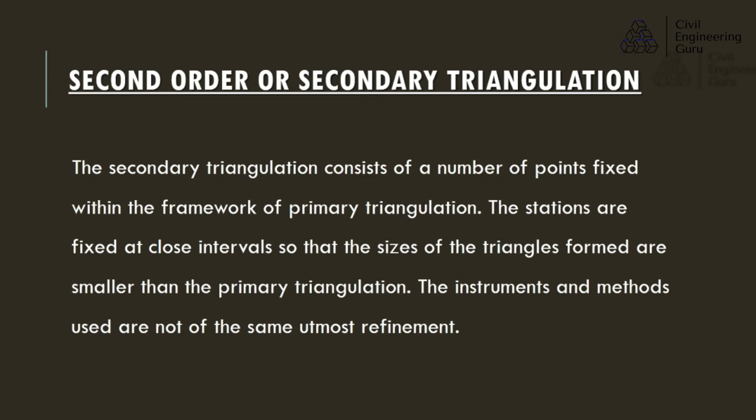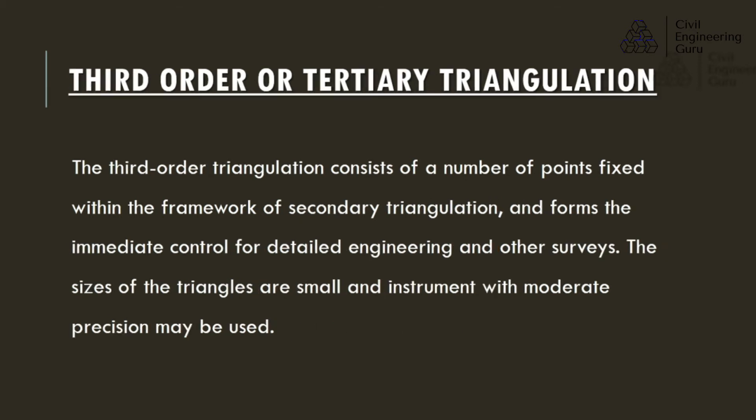Second order or secondary triangulation consists of a number of points fixed within the framework of primary triangulation. The stations are fixed at close intervals so that the sizes of the triangles formed are smaller than in primary triangulation, and the instruments and methods used are not of the same utmost refinement. Third order or tertiary triangulation consists of points fixed within the framework of secondary triangulation and forms the immediate control for detailed engineering and other surveys; the sizes of the triangles are small and instruments with moderate precision may be used.